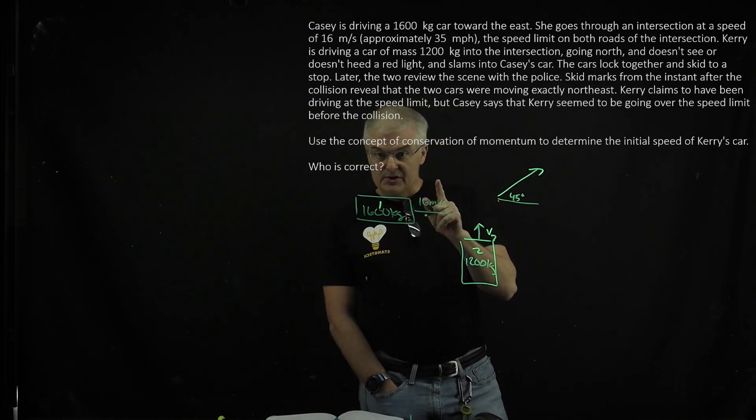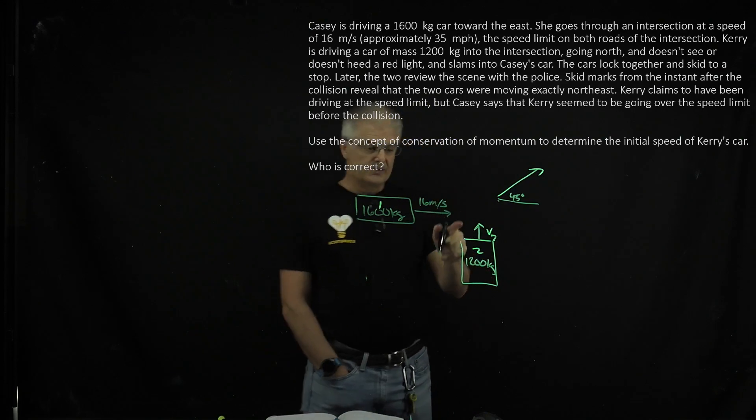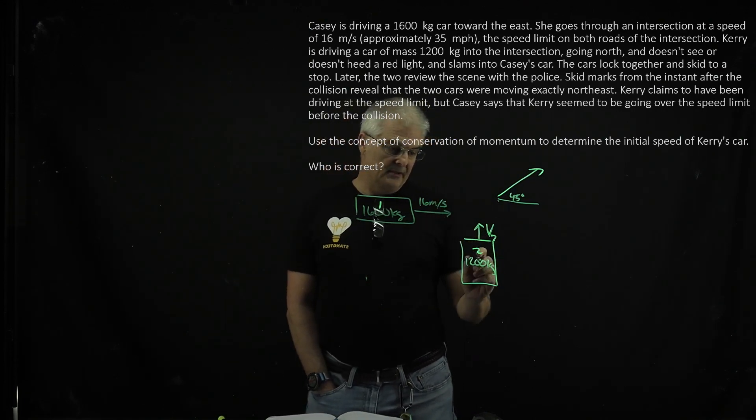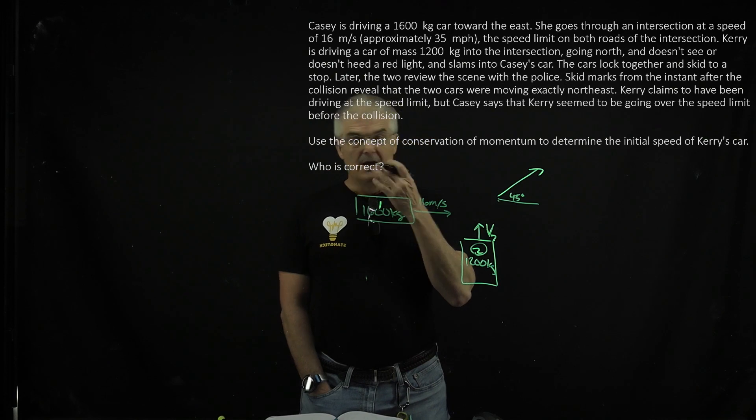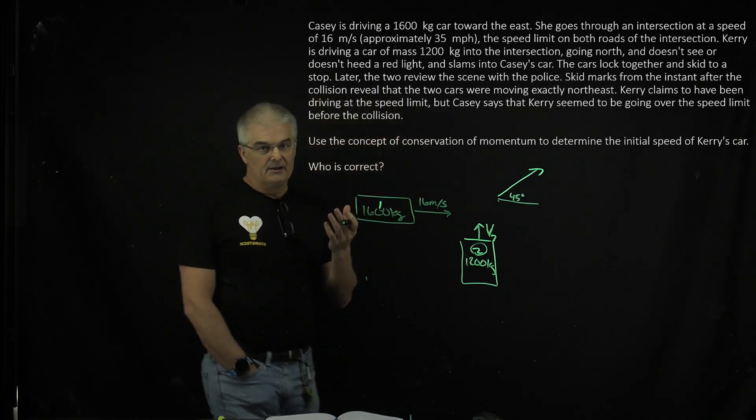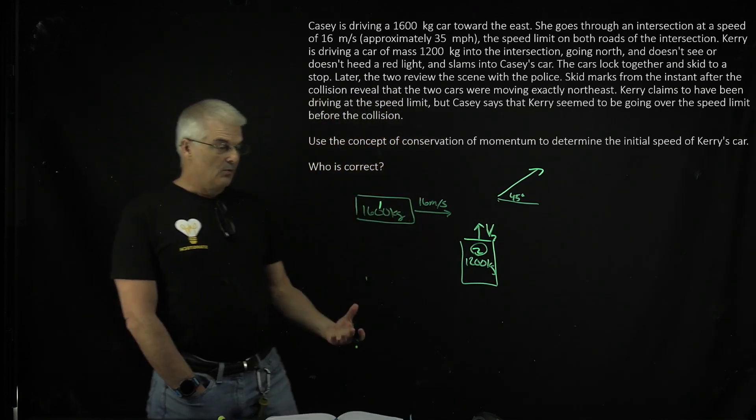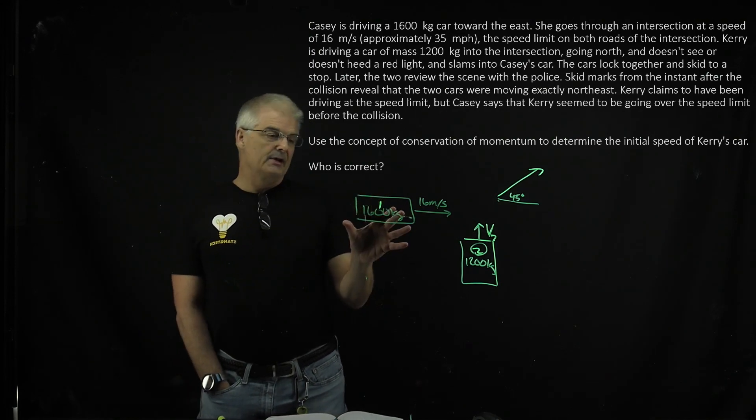And the question is, what was Carrie's car? So this is Carrie, person number two. And we're going to see if she was going the speed limit. Was she going the speed limit?